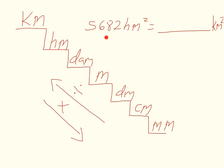The next example: 5,682 hectometers squared — we want to figure out how many kilometers squared it equals. We're starting at hectometers and converting to kilometers, so we're going up the stairs, which means we're dividing. We're going up one stair, so we'd normally divide by 10, but since we're using squared units we're actually dividing by 10 squared. 10 squared is 10 times 10, which equals 100. So our equation is 5,682 hectometers squared divided by 100.